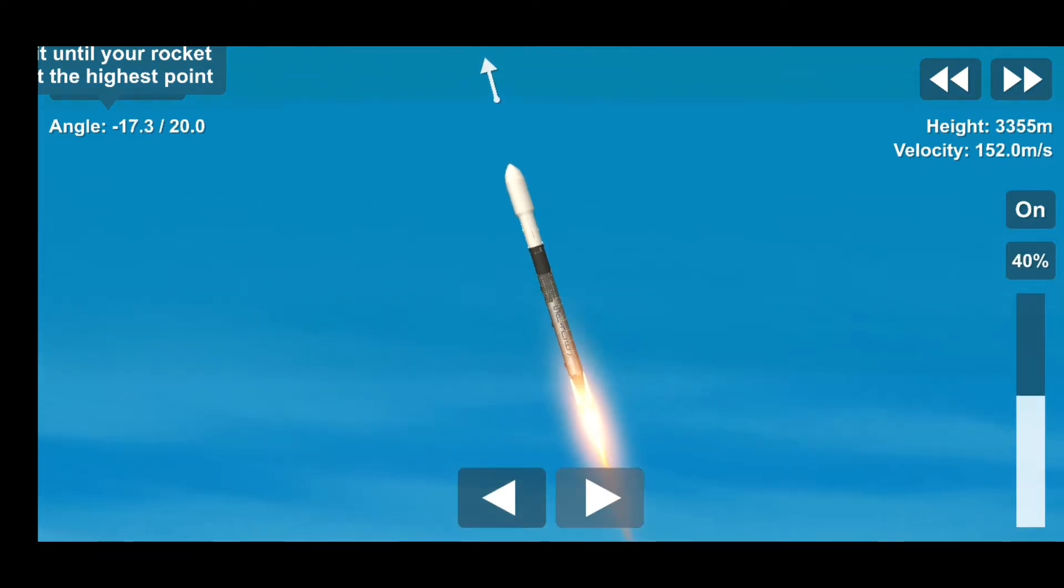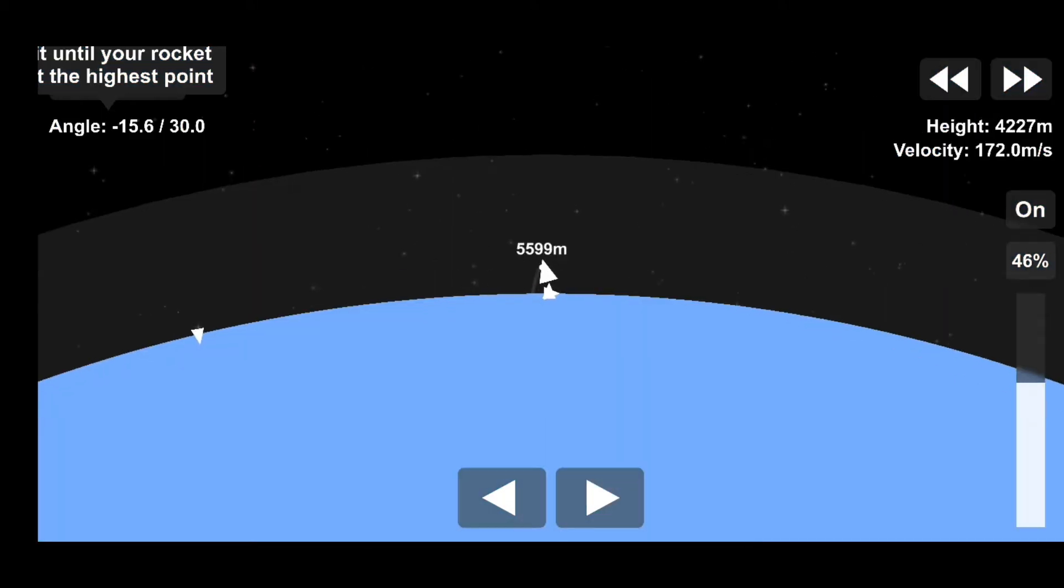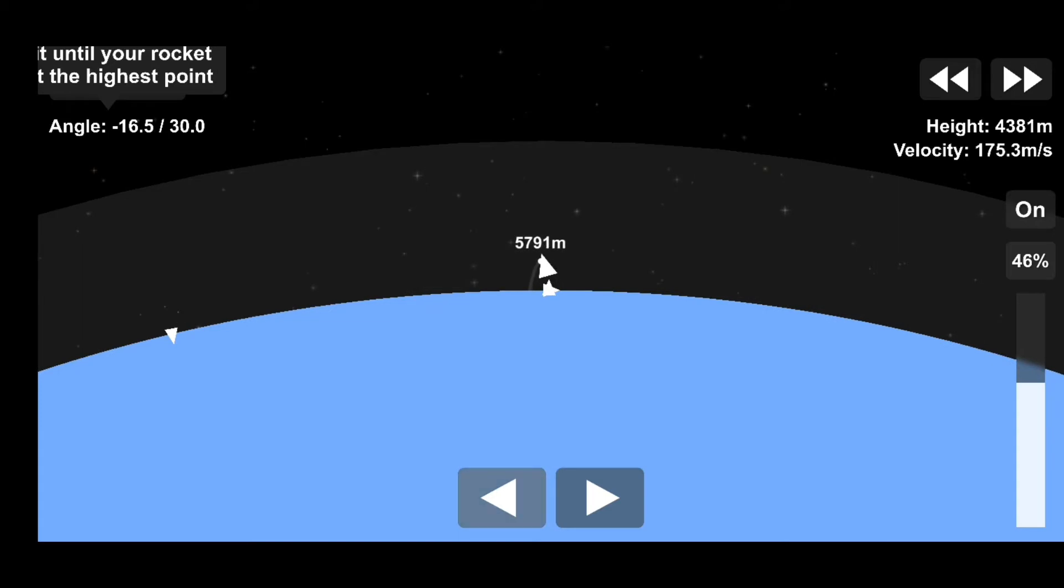We're going to throttle the engines down in preparation for Max-Q. This is the largest structural load that the vehicle will see during ascent, so slowing the vehicle down a little helps during that short period. Max-Q coming up here in just a couple of seconds. Max-Q.